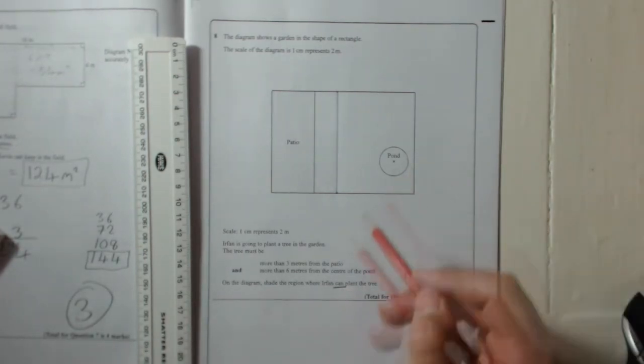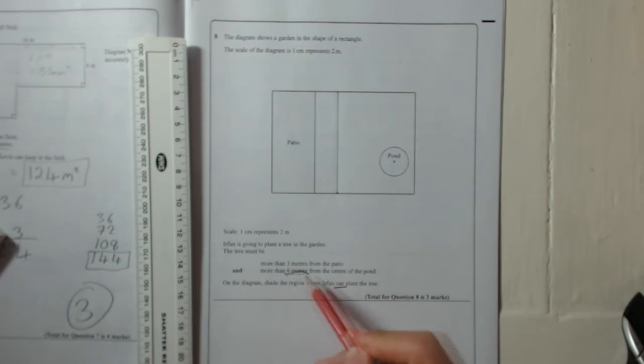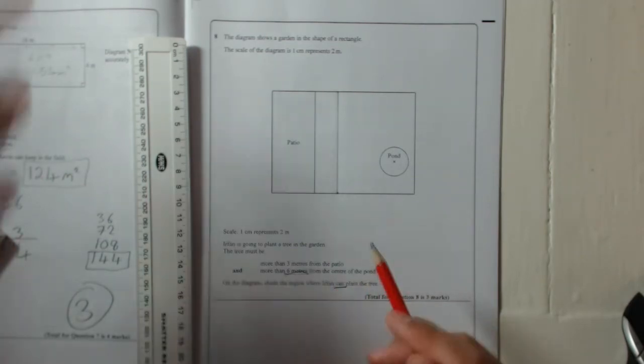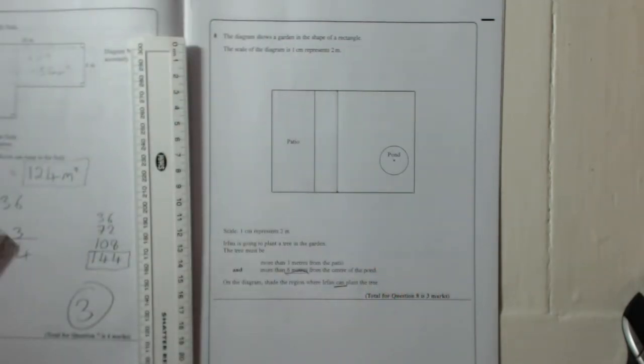So now we'll do the pond, it's got to be six metres from the centre of the pond. Now the centre of the pond is a point. When you're doing a distance away from a point, you need to use a compass.